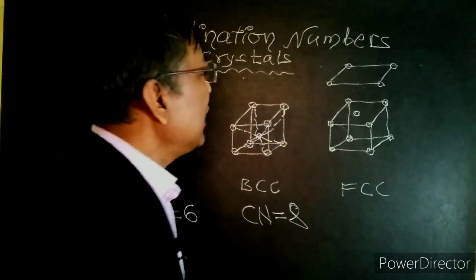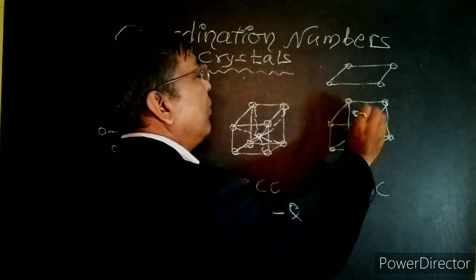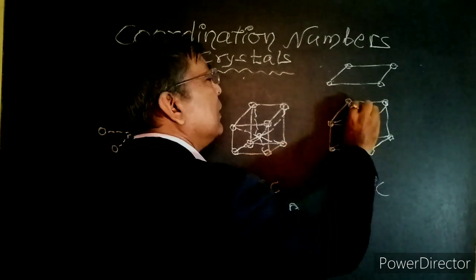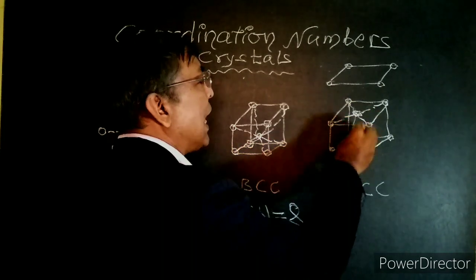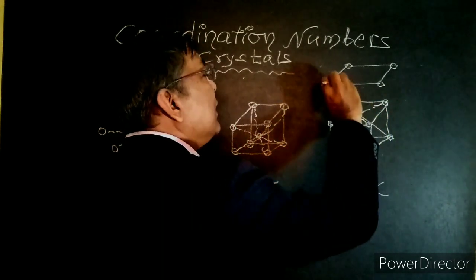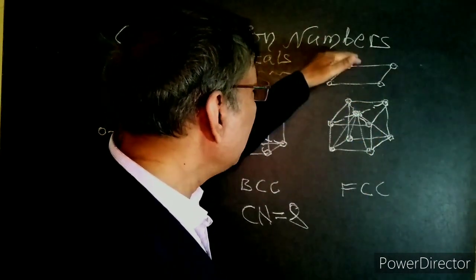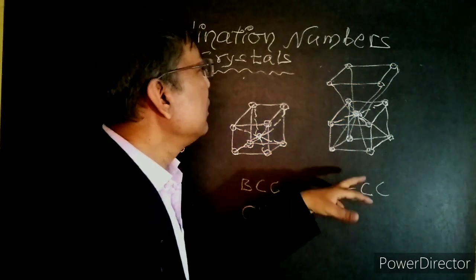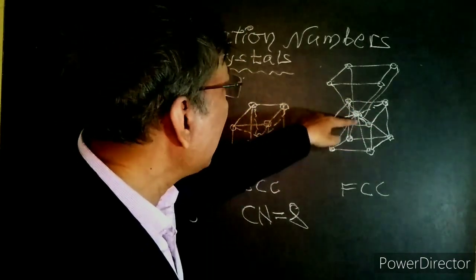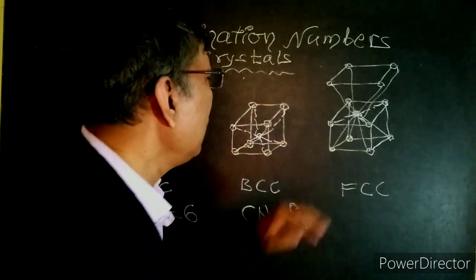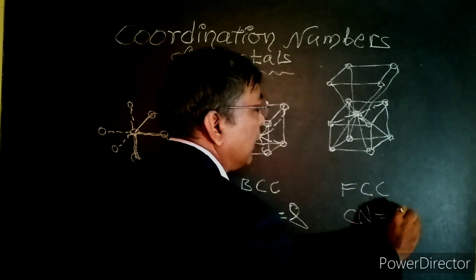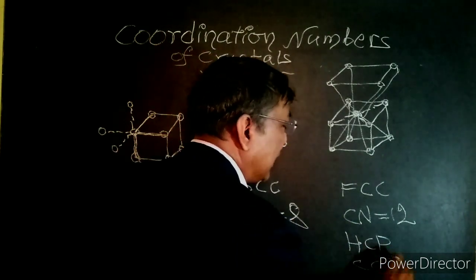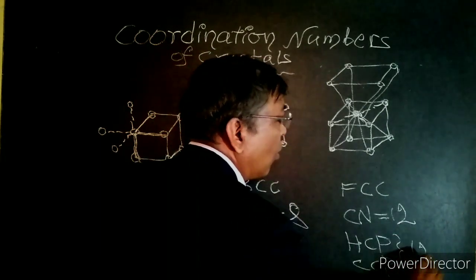For FCC, the face centered particle has 4 neighbors in its own layer, 4 neighbors from the unit cell above, and 4 neighbors from the unit cell below. So 4 plus 4 plus 4 equals 12. The coordination number of FCC is 12. HCP and CCP also have coordination number 12.